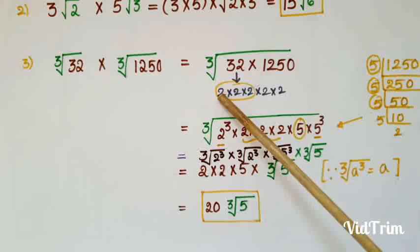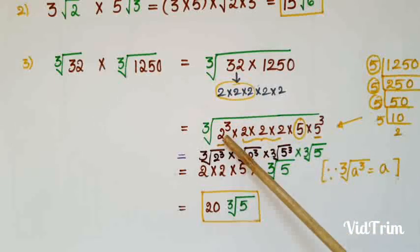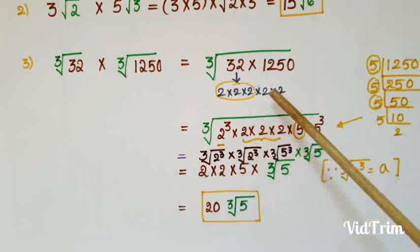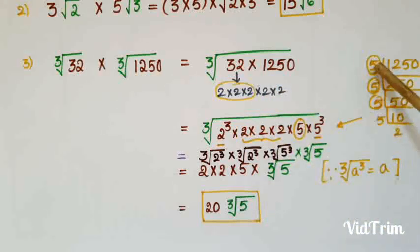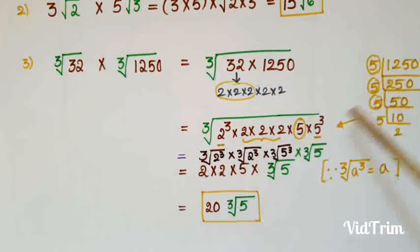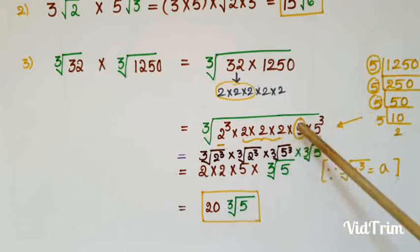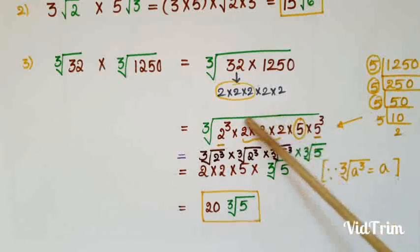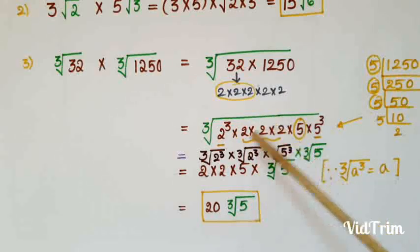From the prime factors, identify the cube numbers. Here there is 2³, so write 2³ × 2 × 2. For 1250, there is 5³, so write 5³ and the remaining factors are 5 × 2.